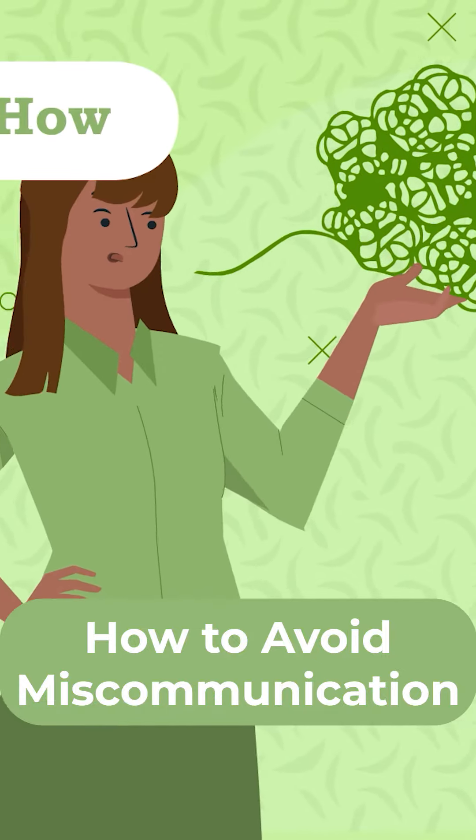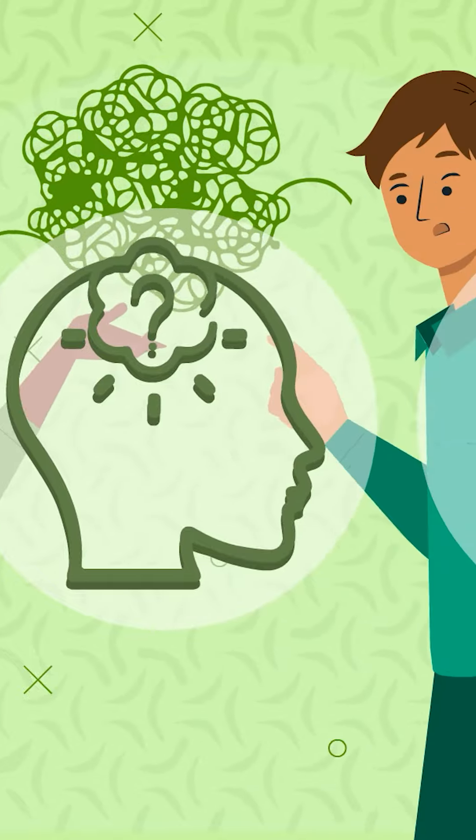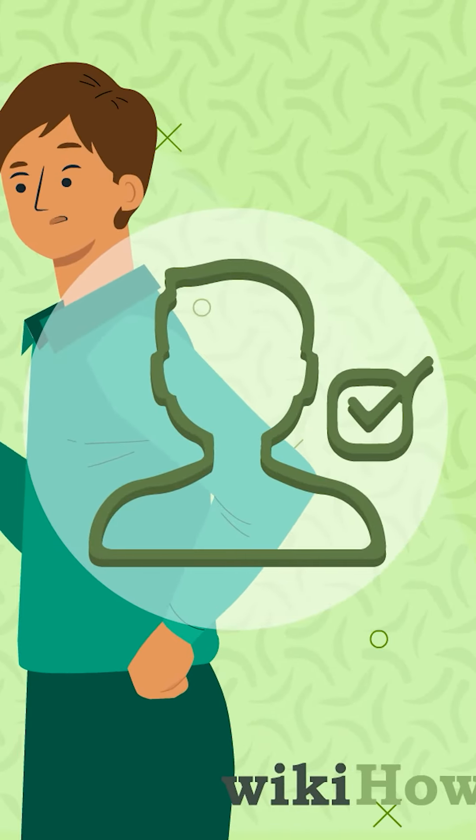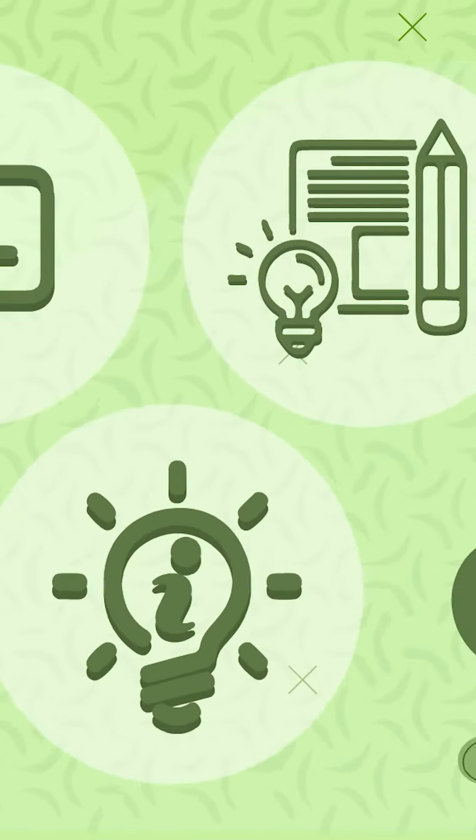To decrease miscommunications, it's important to speak clearly. Remove assumptions and check in with the person to ensure understanding. When communicating electronically, be clear, concise, and informative.